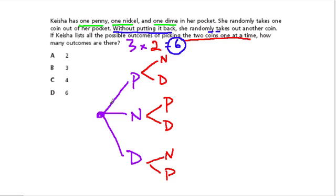You can see them here in the tree. Here's one possibility: penny-nickel, and then penny-dime, that's the second possibility. Nickel-penny, three. Nickel-dime, four. Dime-nickel, five. And then dime-penny, six possibilities.